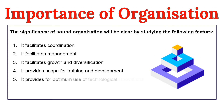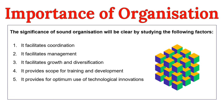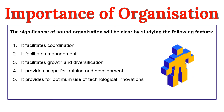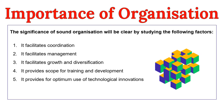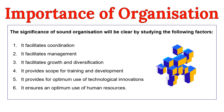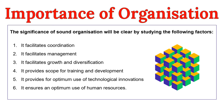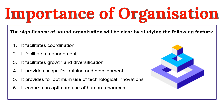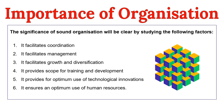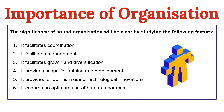The next point is that it provides for optimum use of technological innovations. A sound organization structure is not rigid but flexible, giving adequate scope for improvement in technology. The next point is that it ensures optimum use of human resources. Sound organization matches the job with the individuals and vice versa, ensuring that every individual is placed on the job for which he is best suited. This helps in the better use of individuals working in an enterprise.